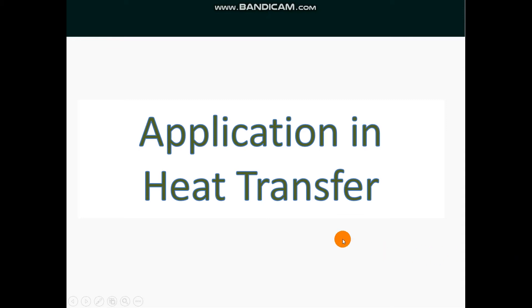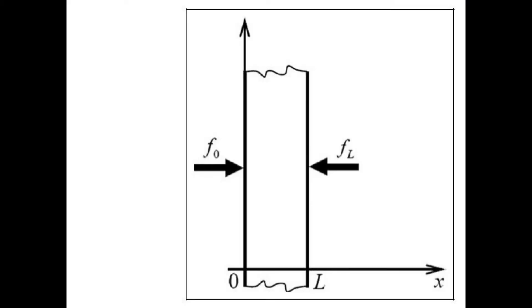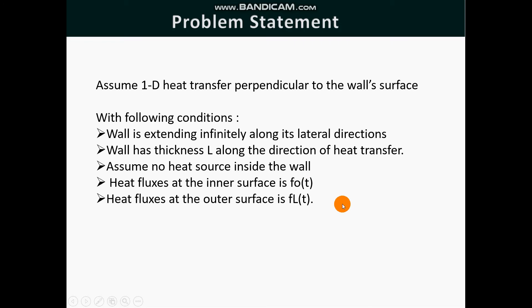Let us take an example of the Green's Function solution to the transient heat transfer through the building wall. Assume 1D heat transfer perpendicular to the wall surface as wall is extending infinitely along its lateral directions, but has thickness L along the direction of heat transfer. Assuming no heat source inside the wall and heat flux is known at the outer surfaces as F0 and FL(t).